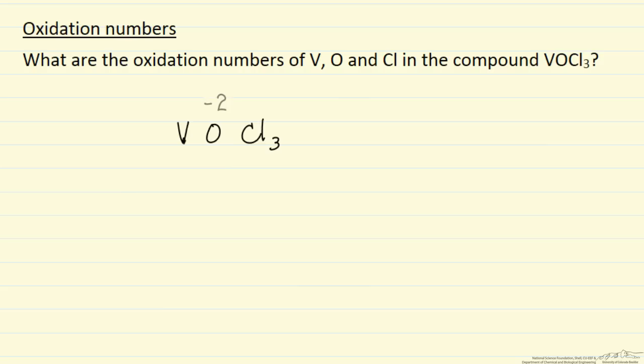Next, oxygen has an oxidation number of minus two. In this compound, we assign an oxidation number of minus one to chlorine. It's not always the case for chlorine, but in this compound that's the most reasonable assignment.